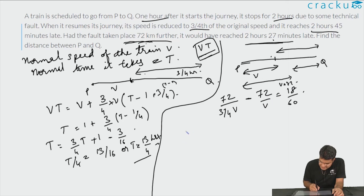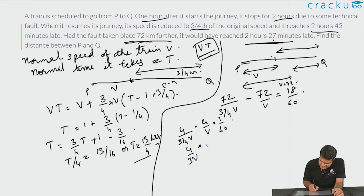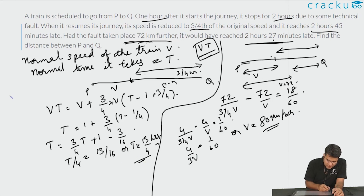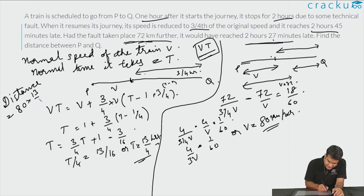Solving: (4/3V) × 72 − 72/V = 1/60 becomes (96 − 72)/V = 1/60, so 24/V × ... simplifying gives V = 80 km/h. Therefore the total distance between P and Q is V × T = 80 × (13/4) = 260 kilometres.